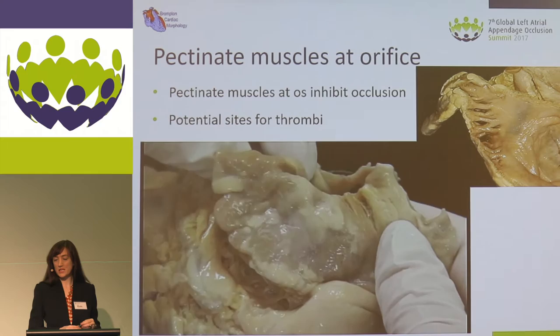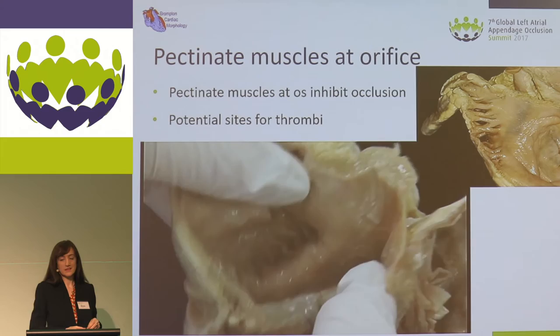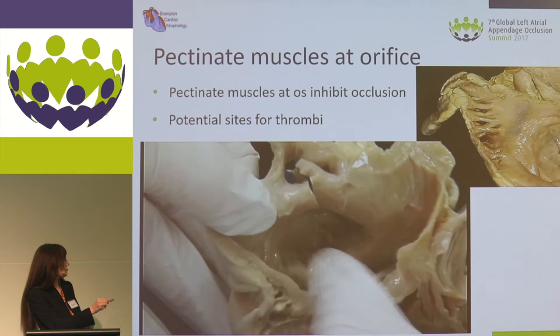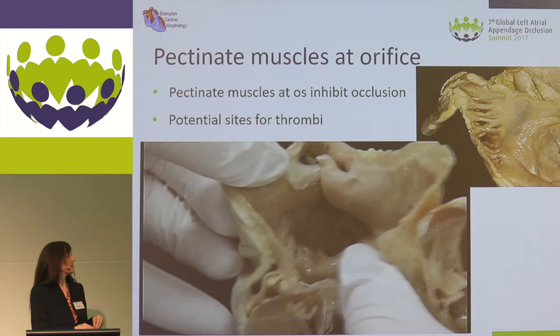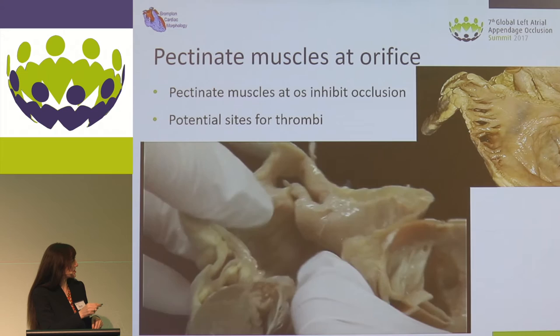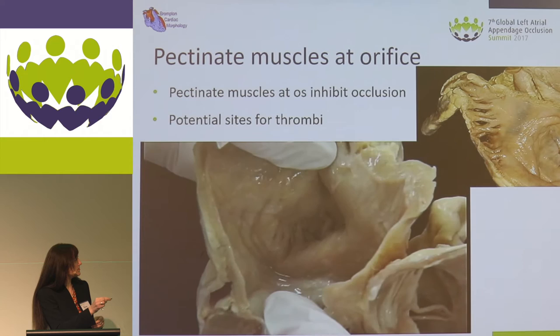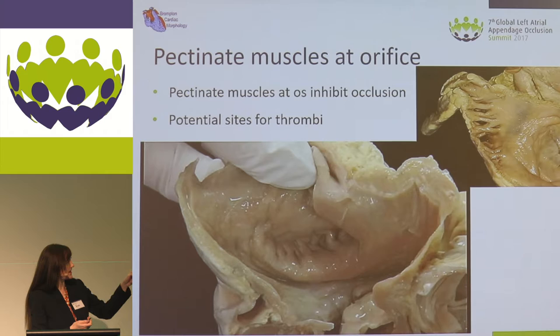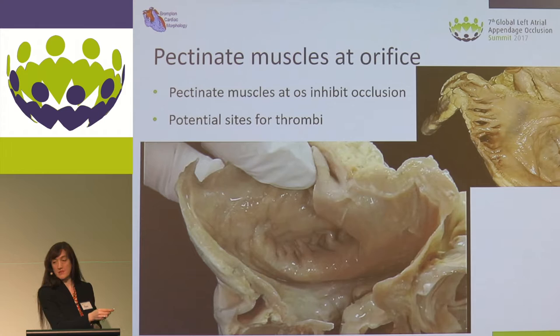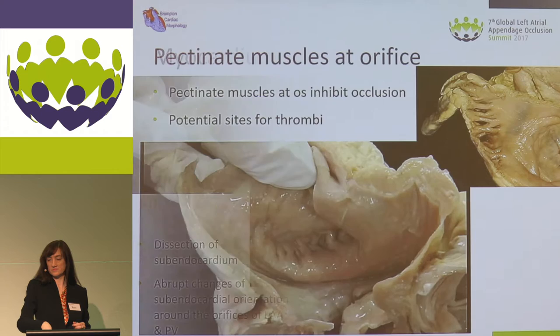Looking at another heart, this is the appendage here — quite a large, broad appendage. We can see an absolutely enormous os. We can see the lateral ridge — I've just cut through there. The pulmonary vein is just at the very superior rim, and we can see how thin that lateral ridge is. Up in the top corner, we can see how extensive the pectinate muscles are — they are actually spilling out into the main body. And just at the corner there, we can just about see the orifice of the mitral valve.